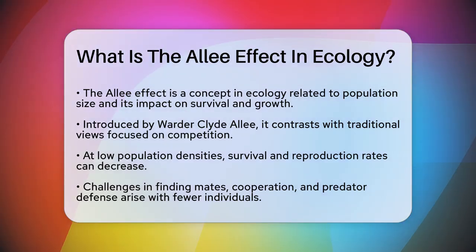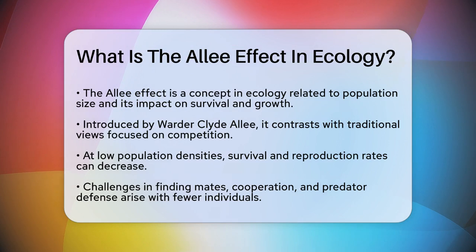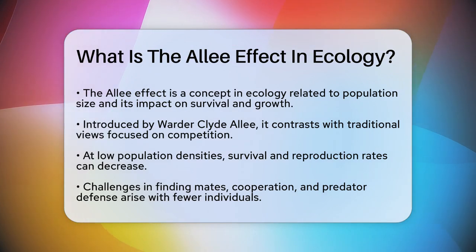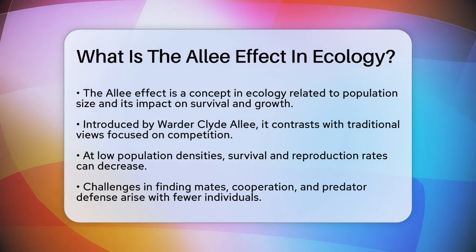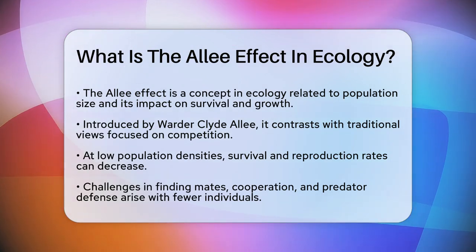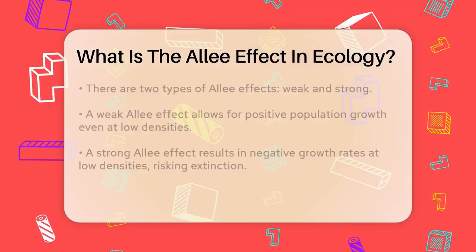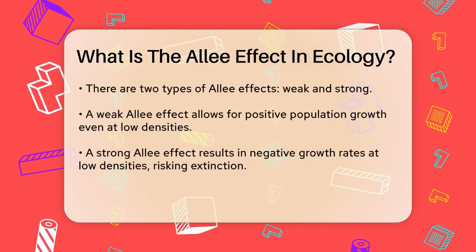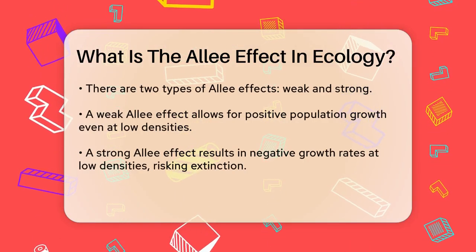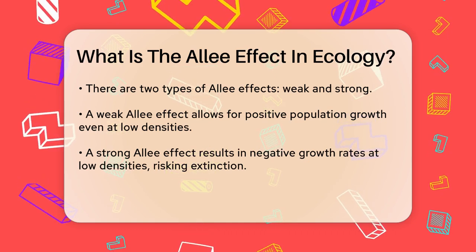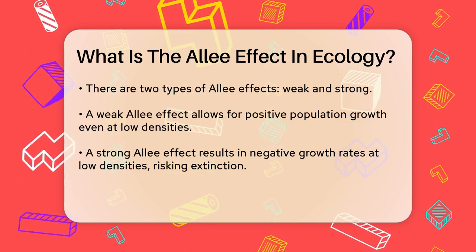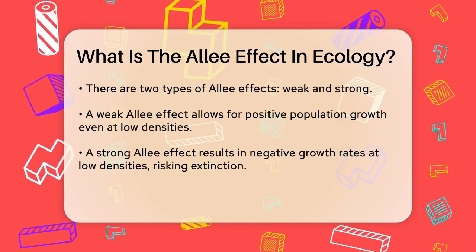In simple terms, the Allee effect suggests that at low population densities, the survival and reproduction rates of a species can actually decrease. This is because individuals may have trouble finding mates, cooperating with each other, or defending against predators when there are too few of them.